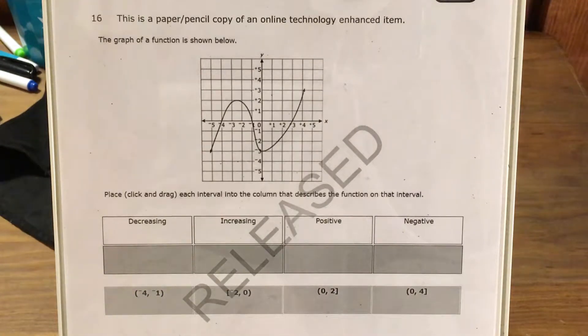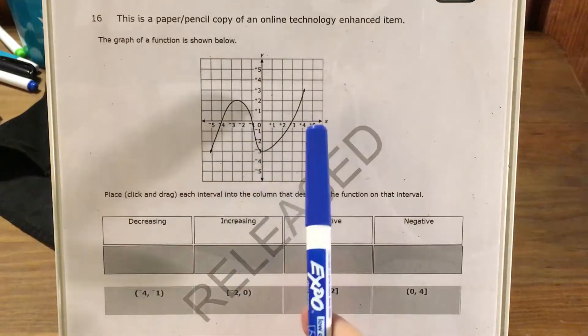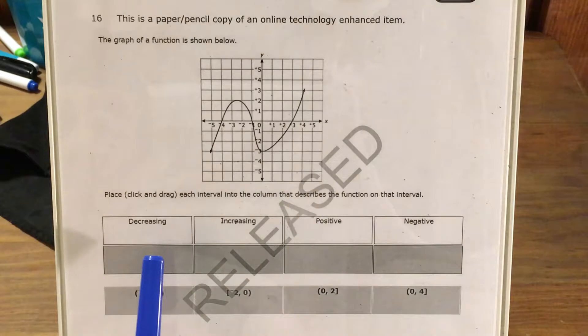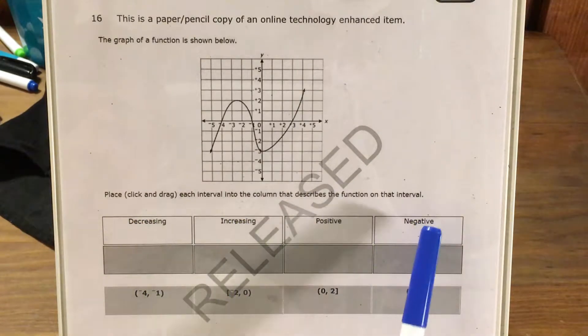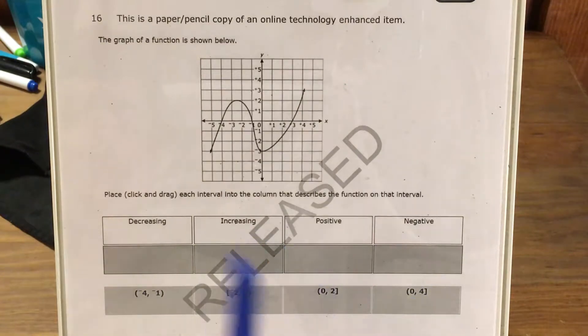Today we're going to tackle question 16 in the Math 3 questions that North Carolina released this past school year. The question gives us the graph of a function, and we're supposed to figure out which interval best describes decreasing, increasing, positive, and negative if we can only match one interval to each choice.